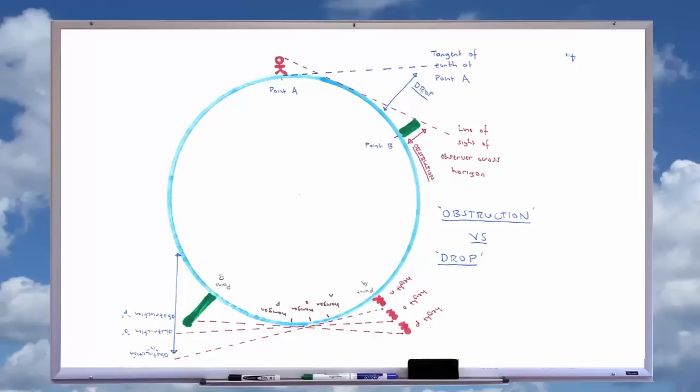A person relying on Dubay's formula could, wittingly or unwittingly, believe he is seeing a lack of curvature when in fact he has calculated a drop that is not commensurate with the expected obstruction.